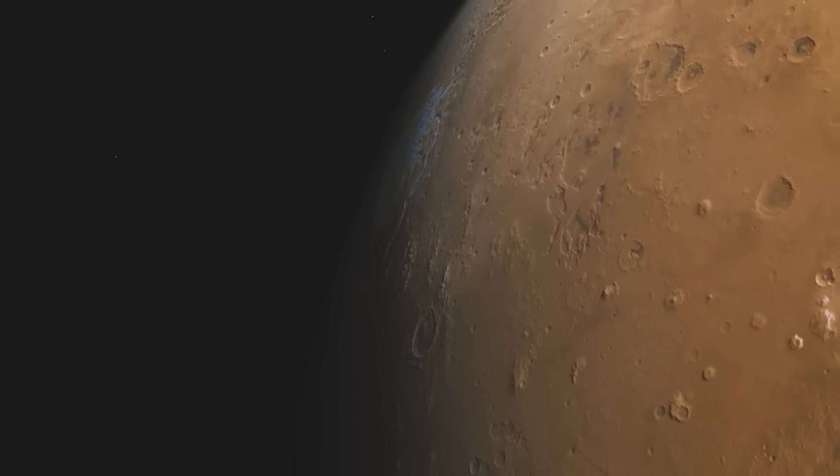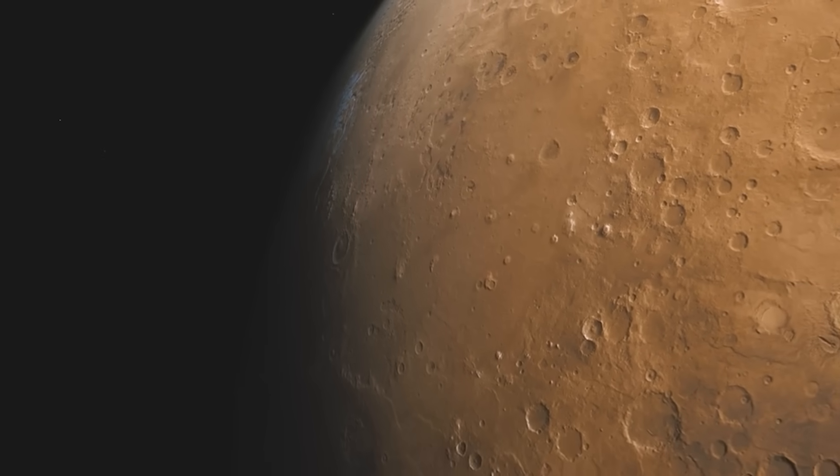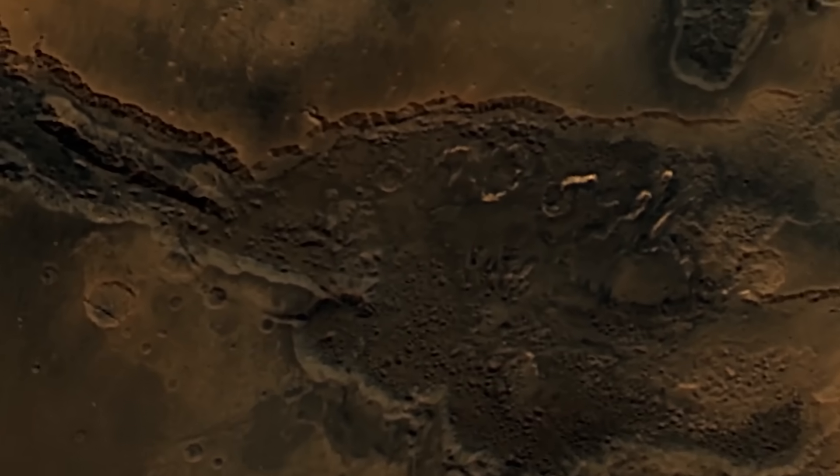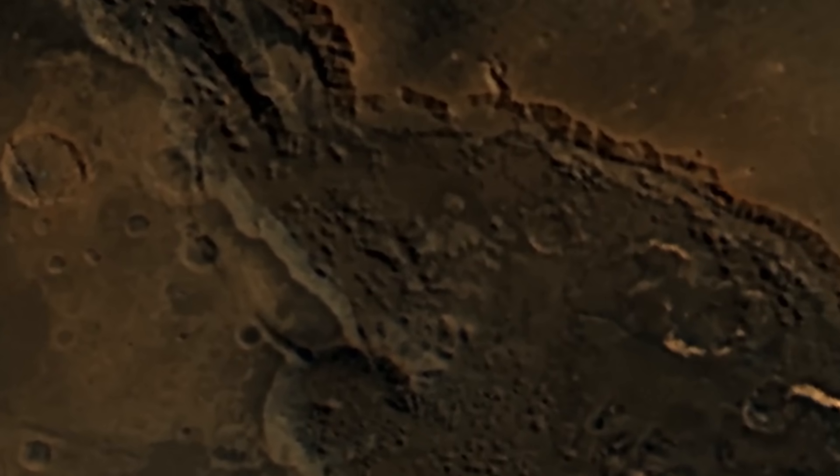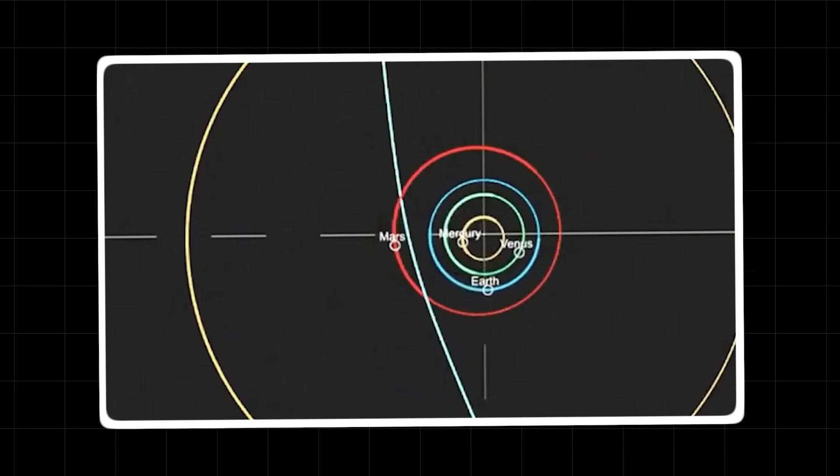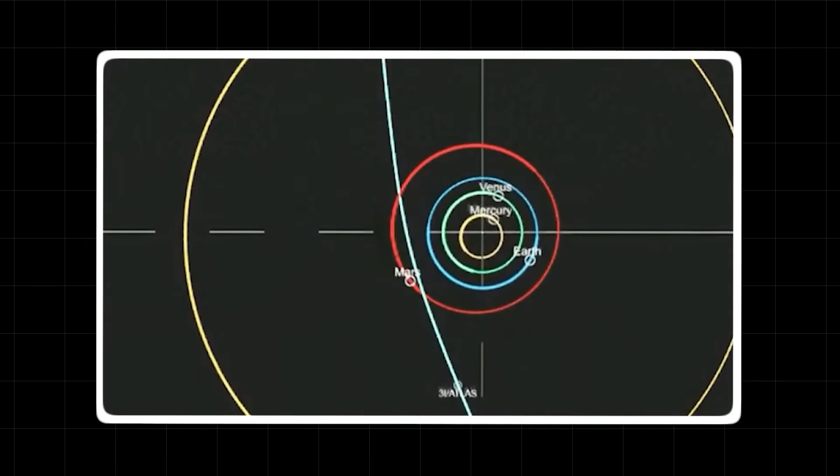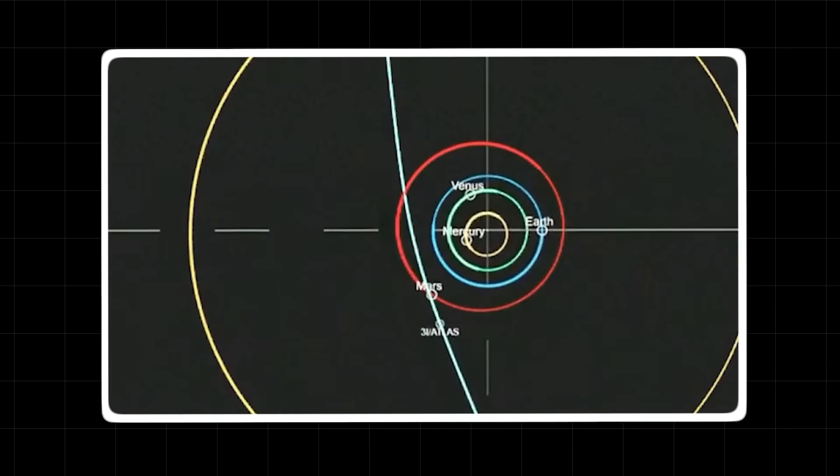But Mars has a way of healing itself. Over time, the wind and the dust have smoothed over the scars of the past, and new life may have found a way to take root in the most unlikely of places. But a collision with 3i Atlas would be different. It would be an event of such magnitude that it would not just scar the planet, it would fundamentally change it. It would be an extinction-level event, a cosmic reset button that would erase billions of years of history.